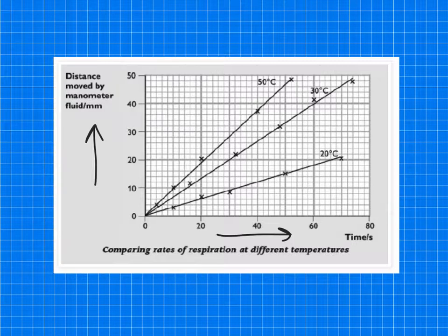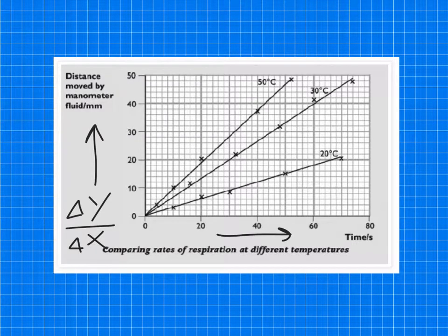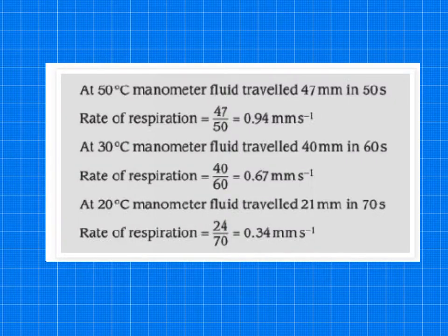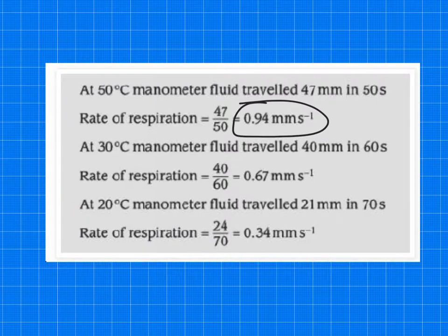Now, they might ask you to work out the gradient of the slope. So remember, it's the change in the distance, so change in y divided by change in x. So then you'll be able to work out the gradient of the line. So at 50 degrees C, you can see the fluid travelled 47 millimetres in 50 seconds, and you can work out the actual distance in millimetres per second. And you can see that it's travelled further. The rate of respiration is faster at 50 than it is at 30, and 30 is faster than 20.